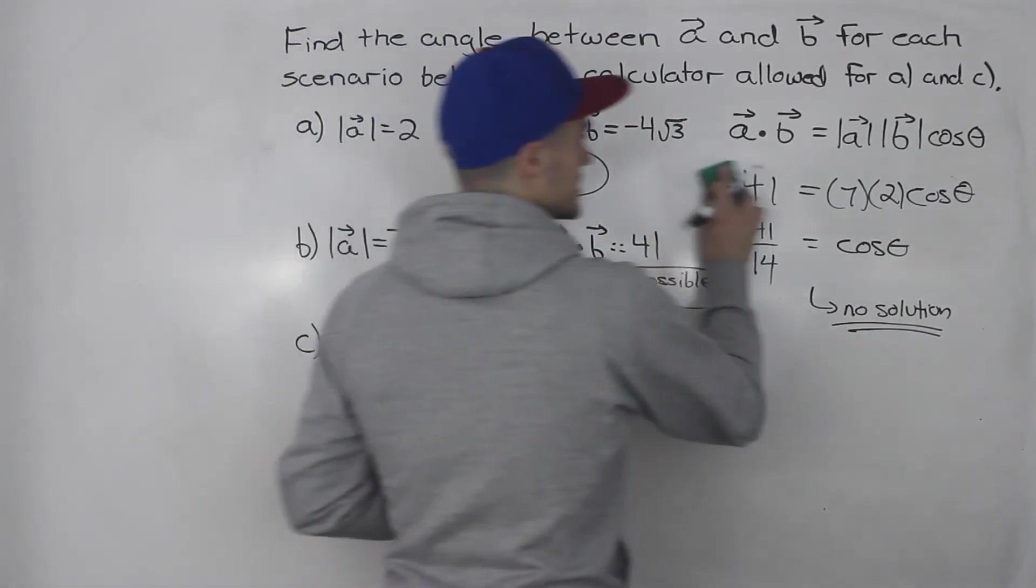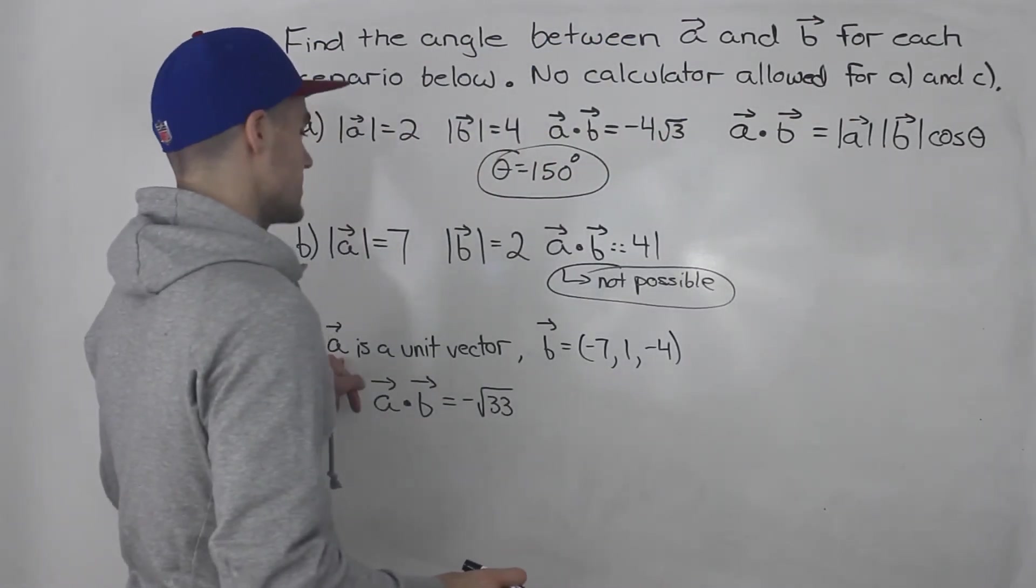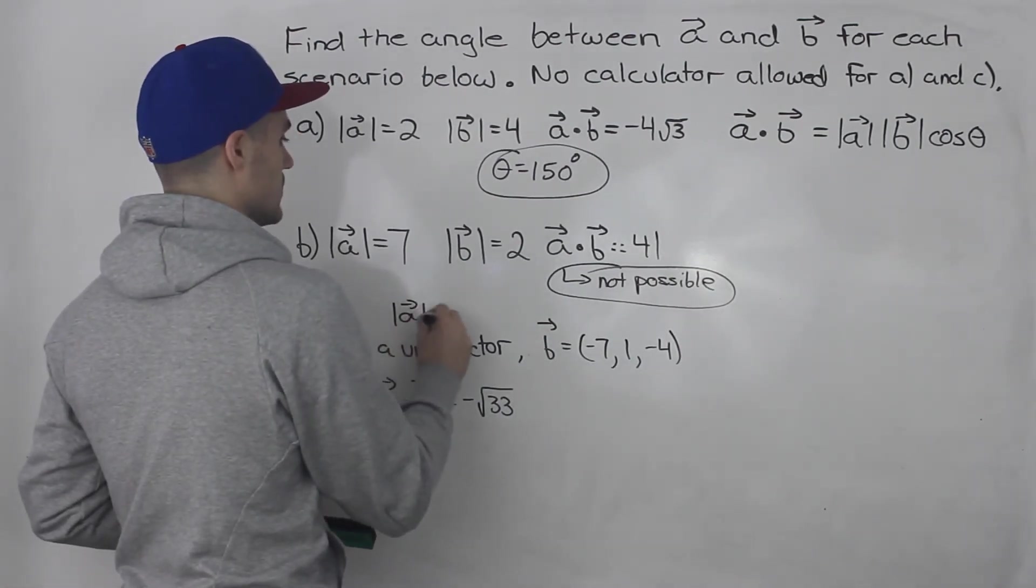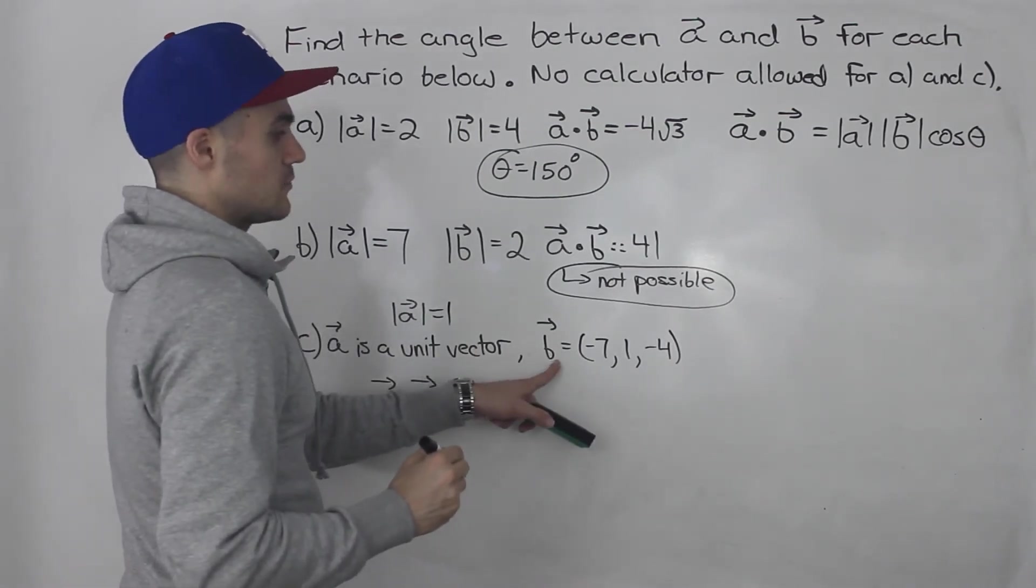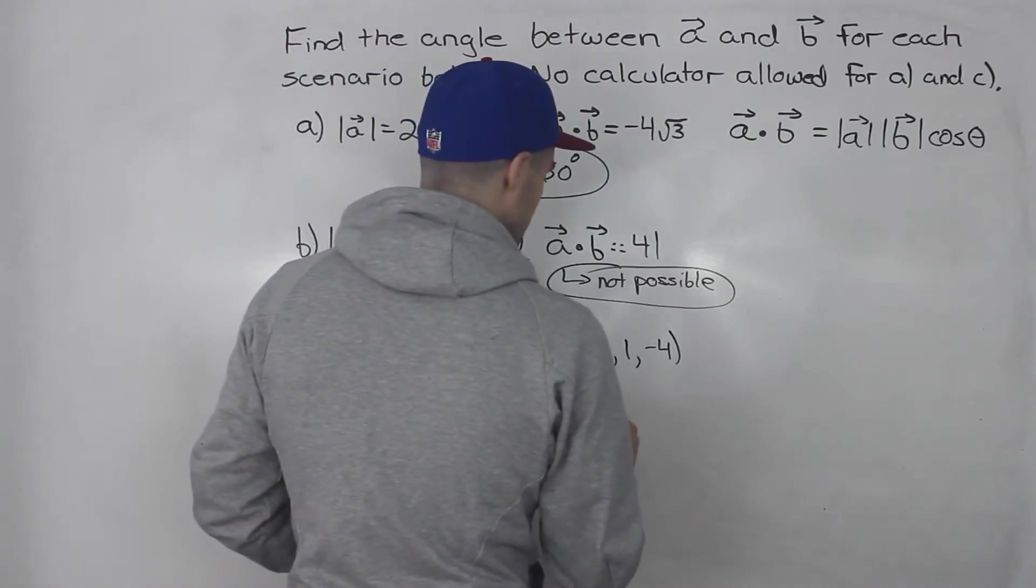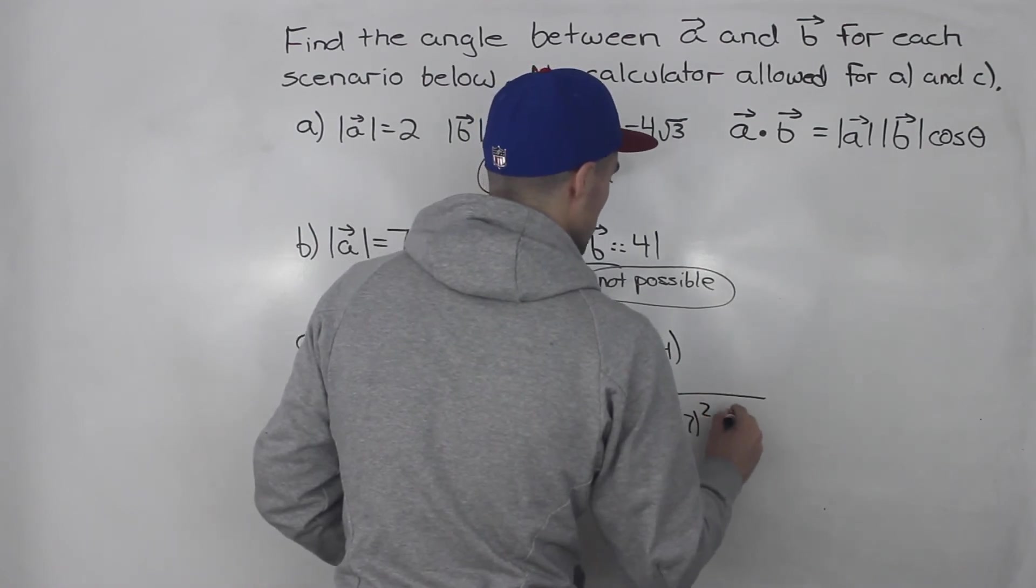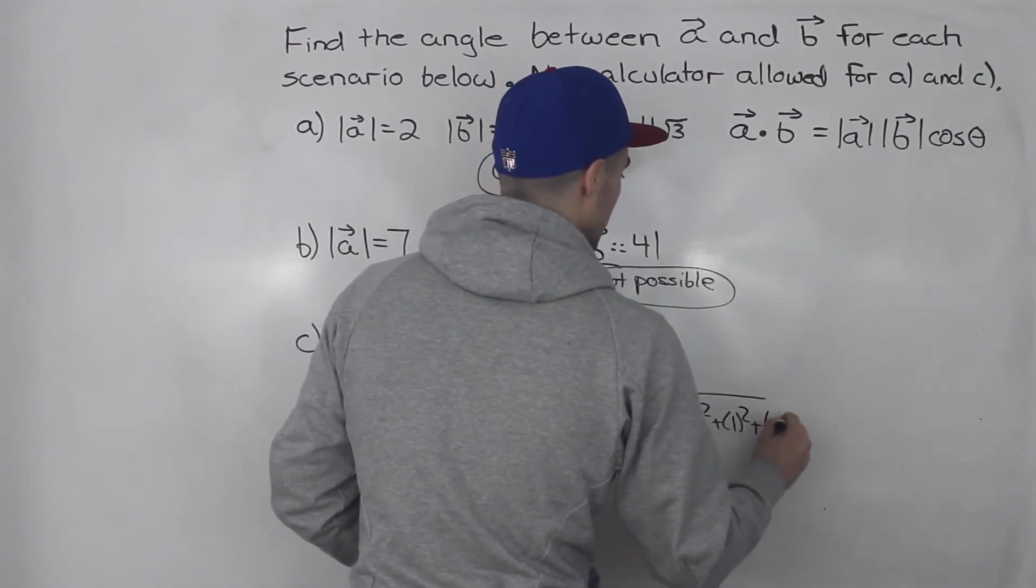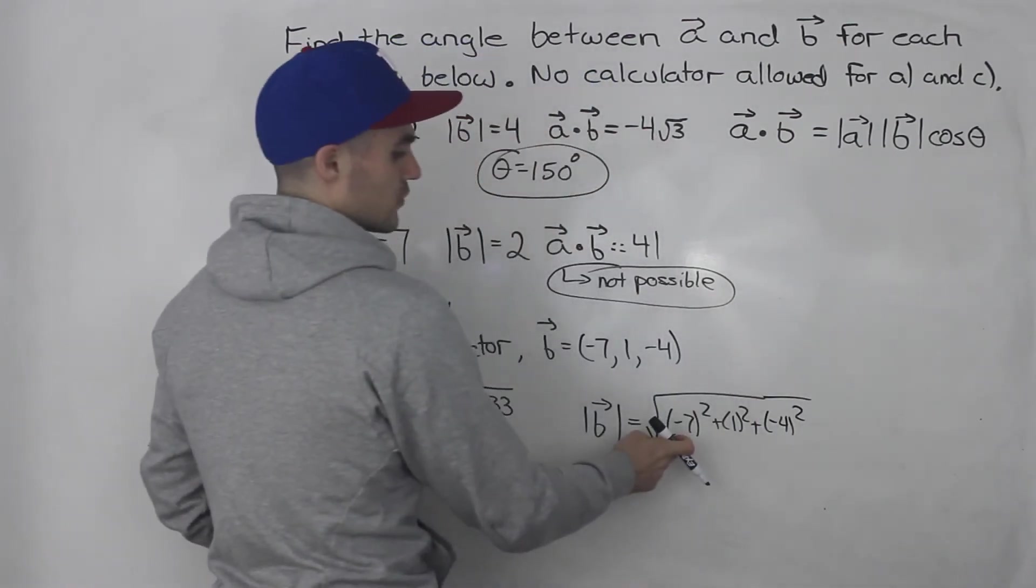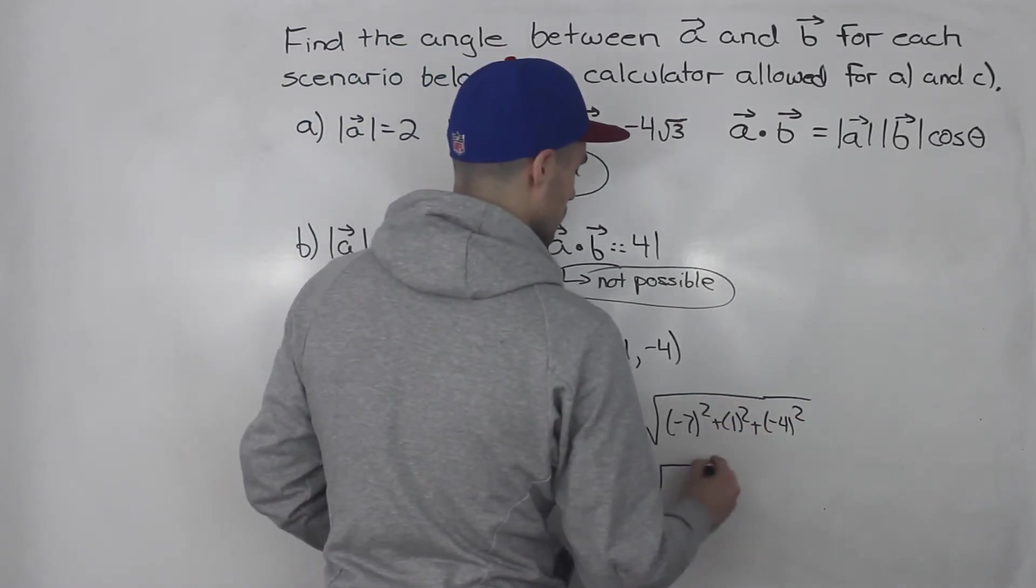And then finally, part c. We got a is a unit vector, so we know the magnitude of a is going to be 1. b we're given in component form, so we're gonna have to figure out what the magnitude of b is. So the magnitude of b would be the square root of negative 7 squared plus 1 squared plus negative 4 squared. And then that would be 49, 50, and then 16. So this would be root 66.